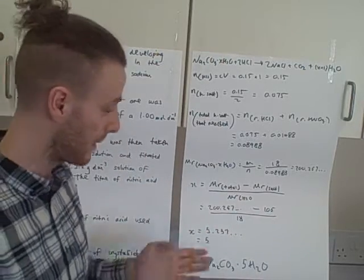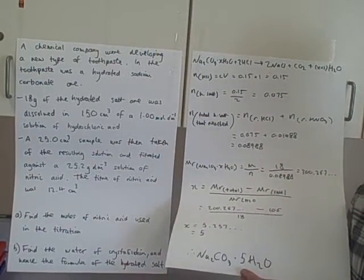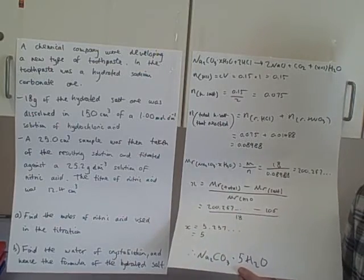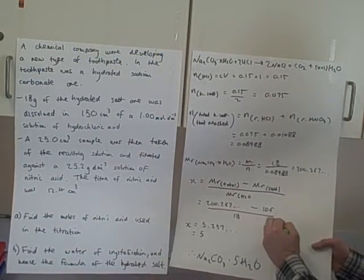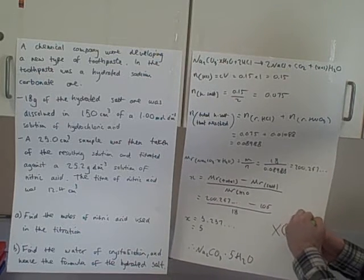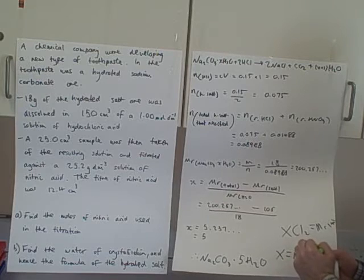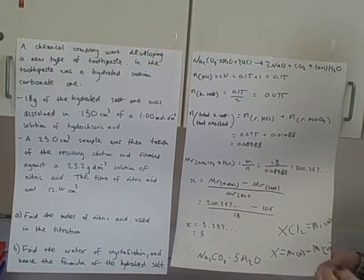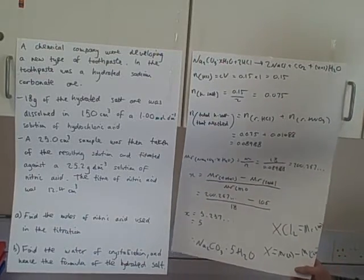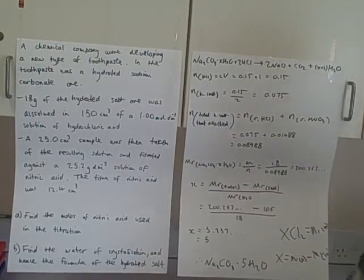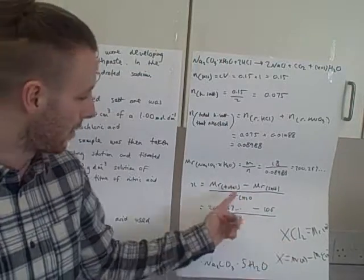We round to the nearest sensible answer, which is 5. Don't forget to put the answer in a formula — the answer isn't just 5, it's Na₂CO₃·5H₂O. If X were an element instead of water of crystallization — say, XCl₂ with a known total Mr — then Mr of X equals Mr total minus Mr of Cl₂. It's actually slightly easier, with less of a formula to remember, and it's no different in principle from what we've done here.